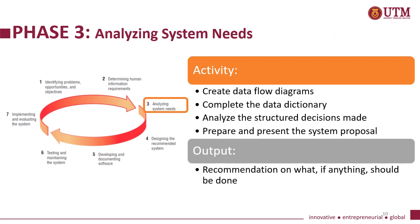Phase three: analyzing system needs. There are four main activities. One, create data flow diagrams. Two, complete the data dictionary. Three, analyze the structured decisions made. And four, prepare and present the system proposal. The main output of phase three should be the recommendation on what, if anything, should be done.